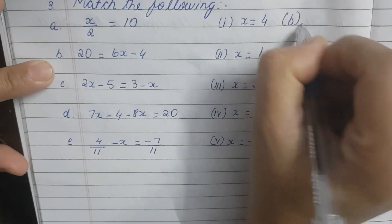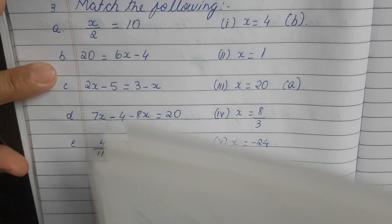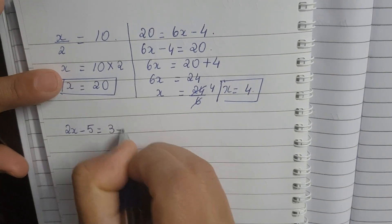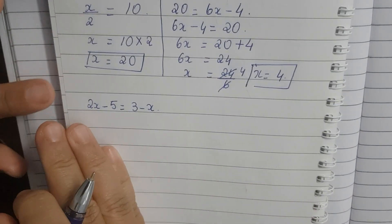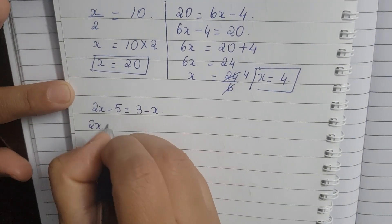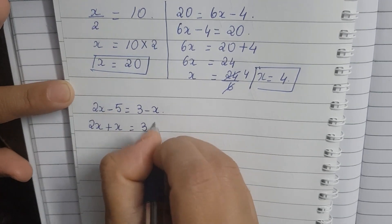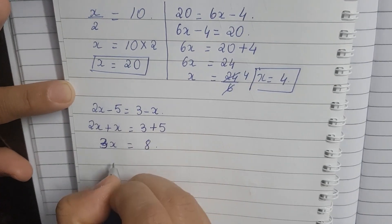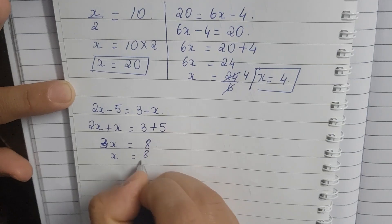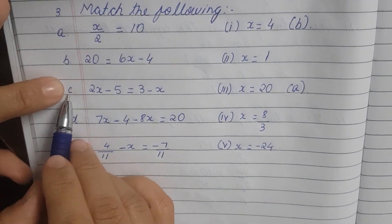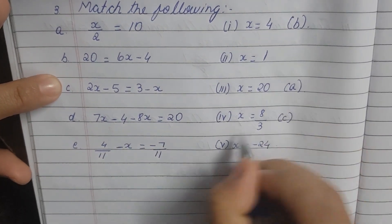Moving on to the third sum: 2x minus 5 is equal to 3 minus x. Bringing x to the left, minus 5 becomes plus 5. So 2x plus x is 3x, and 3 plus 5 is 8. Since multiplication becomes division, the answer is 8 by 3. This is subdivision 4, option C.